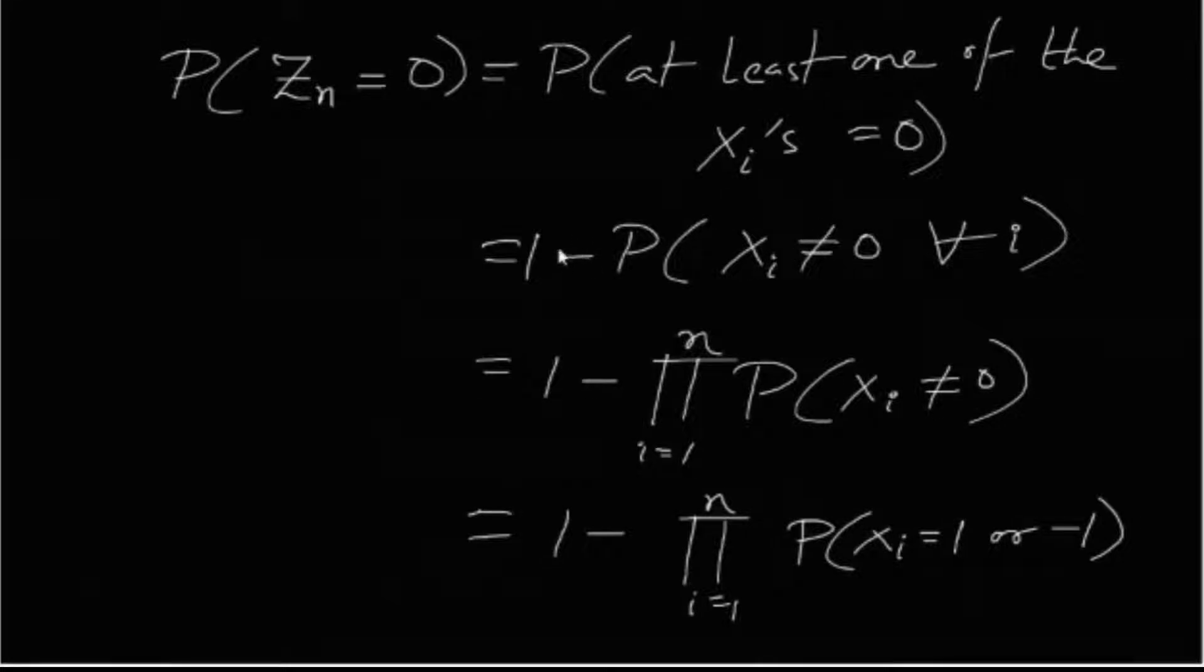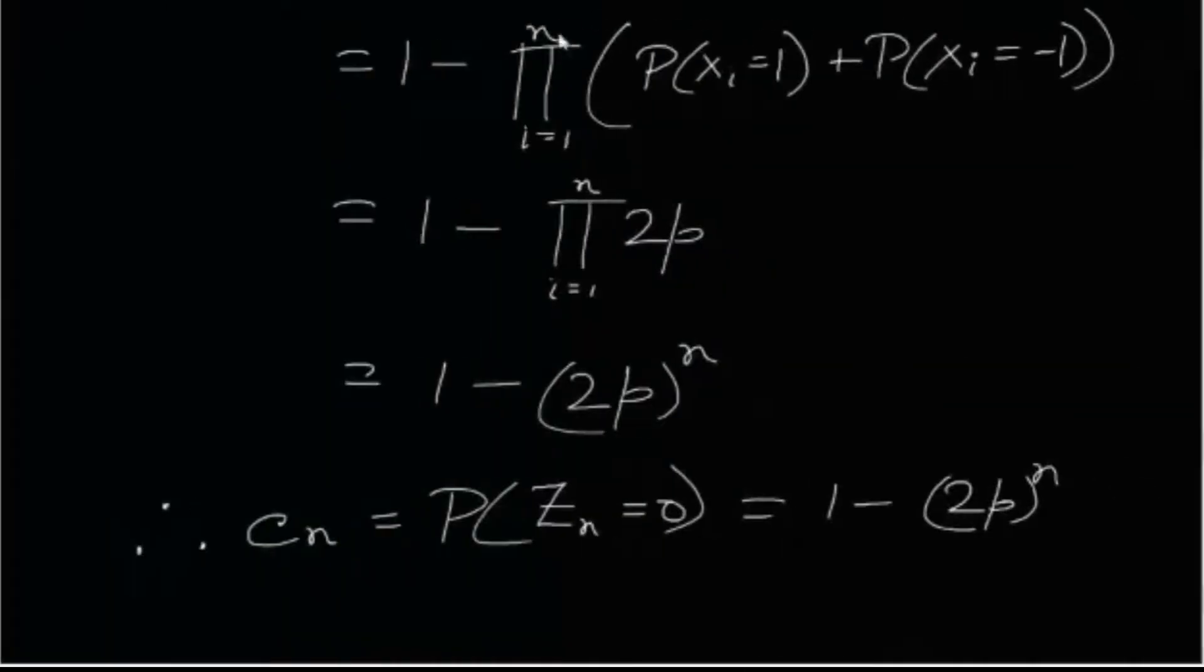Now it is nothing but 1 minus probability xi is not equals to 0 for all i. That means that since the xi's are independent, it's nothing but 1 minus product of probability xi not equals to 0. That means 1 minus product of probability xi equals to 1 or xi equals to minus 1.